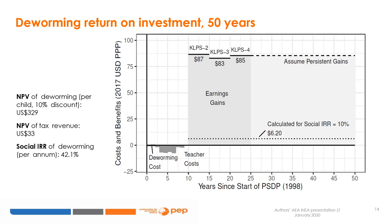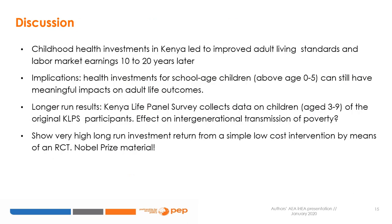In this particular example, the authors show that over 50 years, the social internal rate of return of the deworming program per annum is 42.1% — a huge cost-benefit relationship.